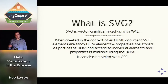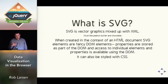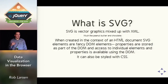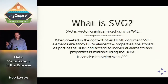SVG is vector graphics — like Adobe Illustrator mixed with XML. It's an XML representation of vector graphics. When created in the context of an HTML document, SVG elements are just fancy DOM elements, so everything you know about manipulating and accessing properties of an HTML element you can do with SVG. It's an easily translatable skill set for the average front-end developer, compared to Canvas which you'll see in a second.